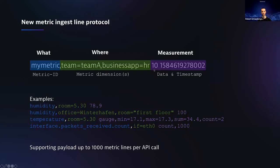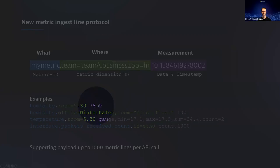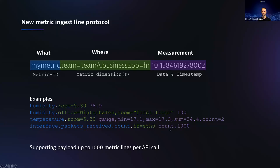The easiest way to use the ingest line protocol is to just provide a numeric value. But you also have more advanced features — you can aggregate multiple data points and send just the consolidated count, or specify that a metric represents a count rather than a percentage or temperature. You have the capability to optionally provide semantics to teach the platform how it should deal with a certain metric.